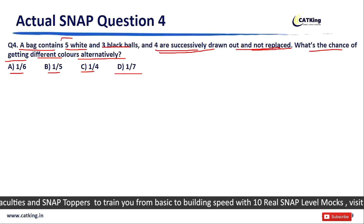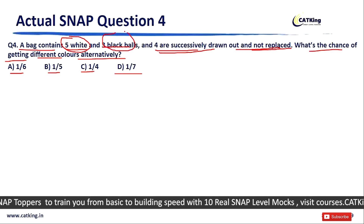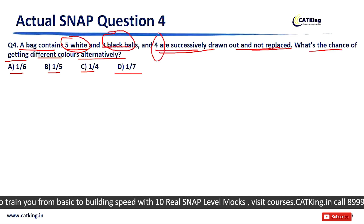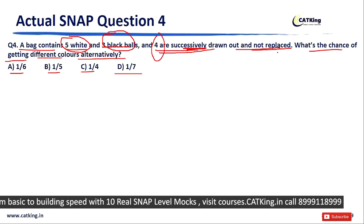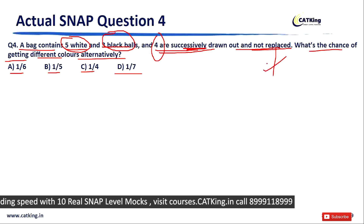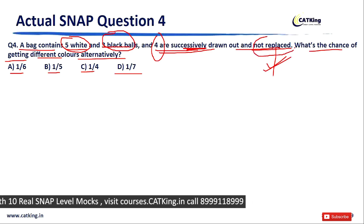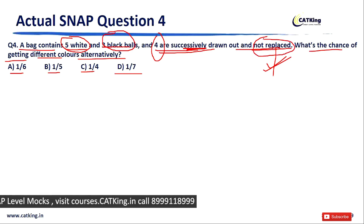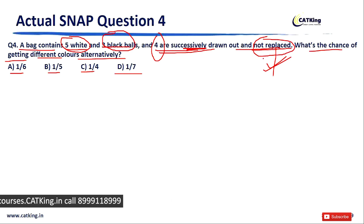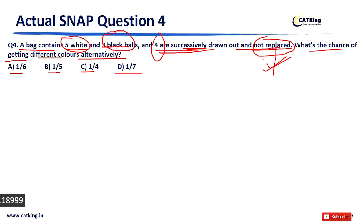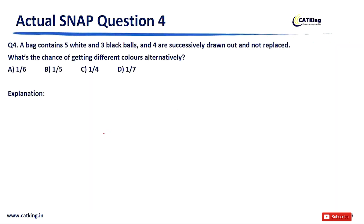We have two types of balls in the bag — 5 white and 3 black — and 4 balls have to be drawn successively without any replacement. This is a very important part; don't miss it or your answer will be wrong. I urge you to pause the video here and try to solve this on your own. Just calculate the probability successively for white and black.